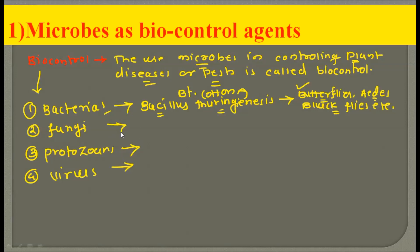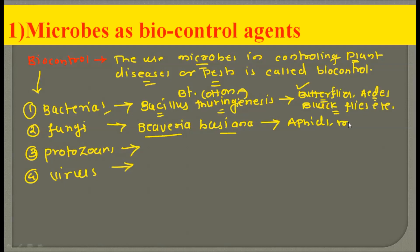Second we have fungi. The example for fungi is Beauveria bassiana. This fungus mainly avoids the development of aphids, millipedes, mites, and whiteflies, all of which are again very harmful for the agricultural fields.